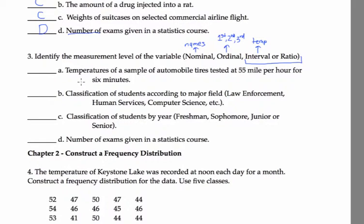So temperatures. That's a number. Since it's temperature, I guess interval. Classification, law enforcement, human services, computer science. Those are names of things. That's nominal.